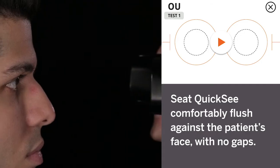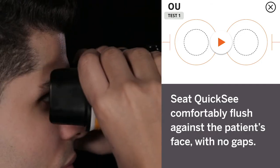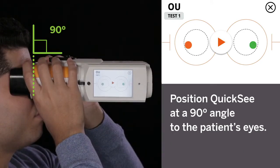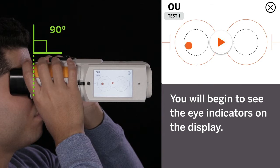Second, seating. Seat QuickSee comfortably flush against the patient's face with no gaps. Position QuickSee at a 90-degree angle to the patient's eyes. You will begin to see the eye indicators on the display.